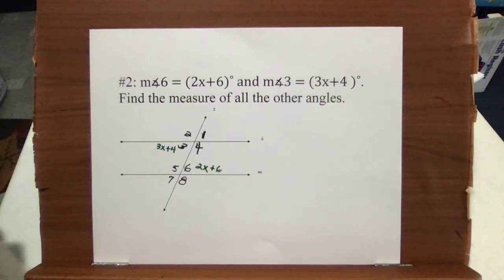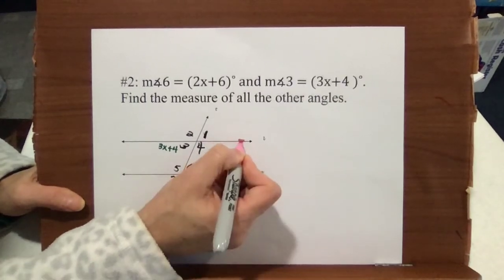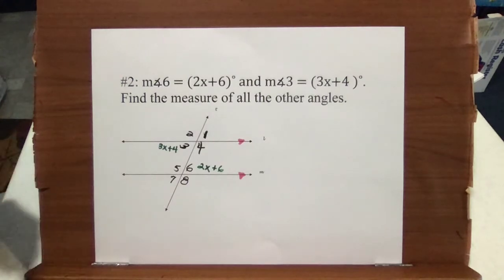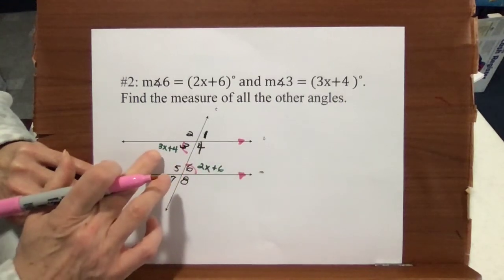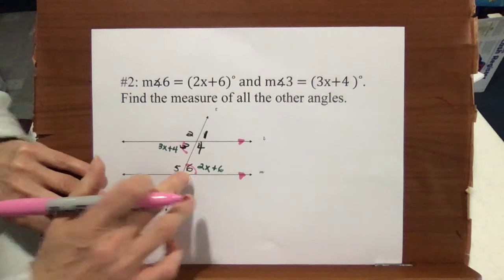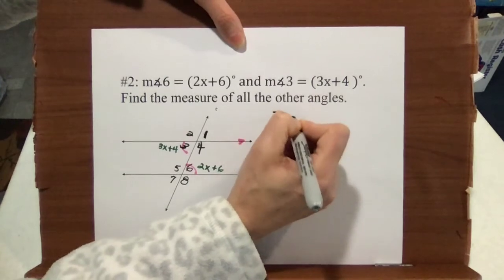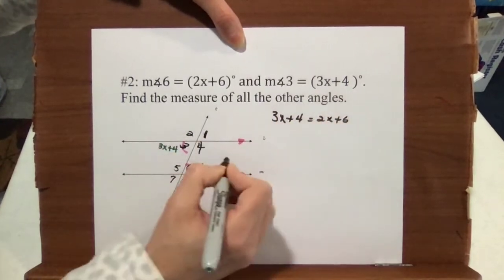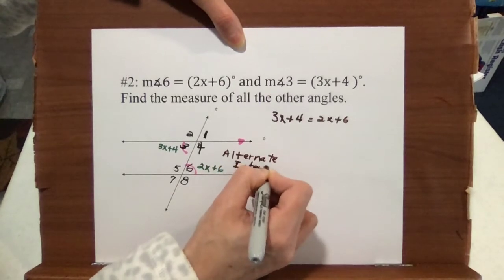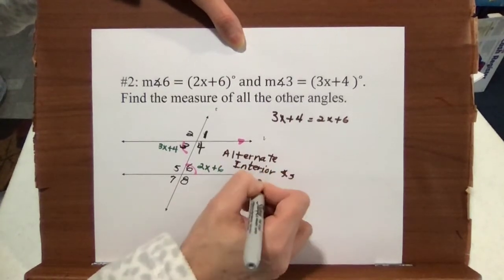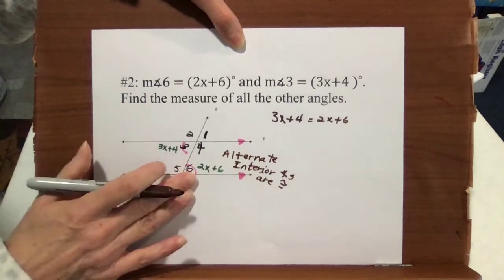What we know about angles 3 and 6 is that because these lines are parallel — so I'm going to mark my lines parallel — angle 3 and angle 6 are congruent. We can mark them congruent, which gives us a visual that the information written on the angles are equal. These are alternate interior angles, and alternate interior angles are congruent when we have parallel lines cut by a transversal.